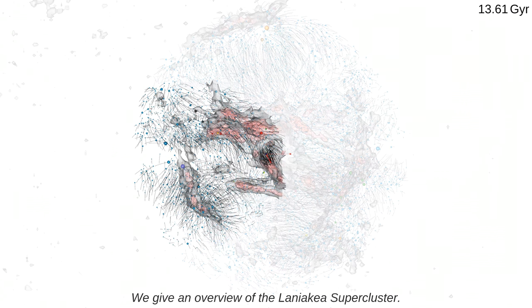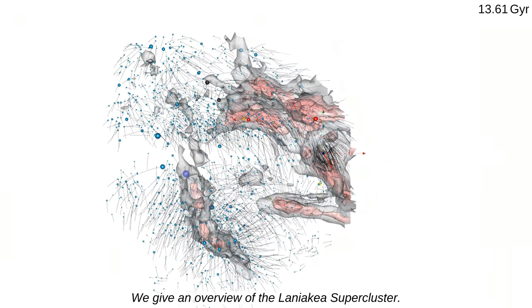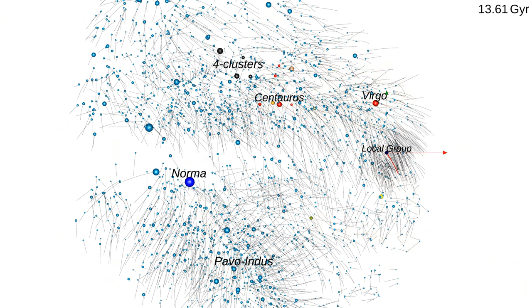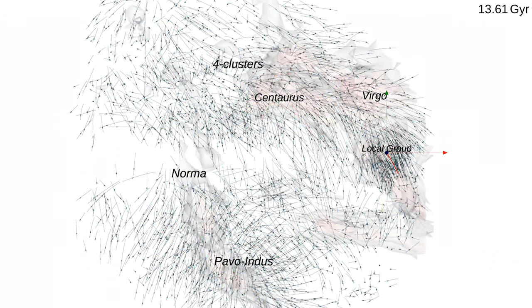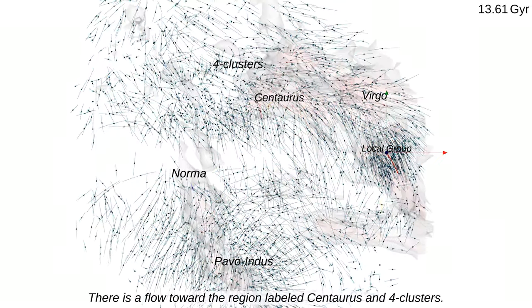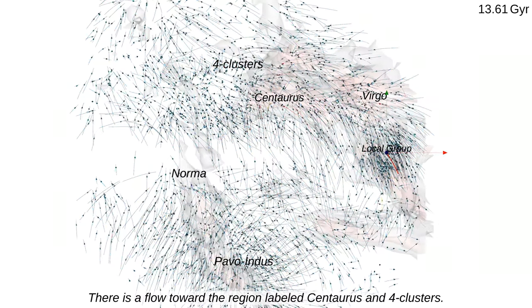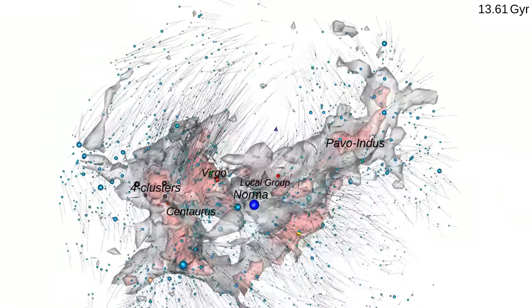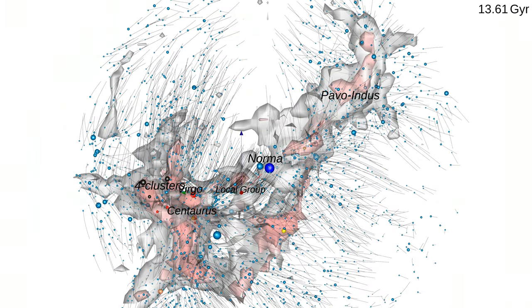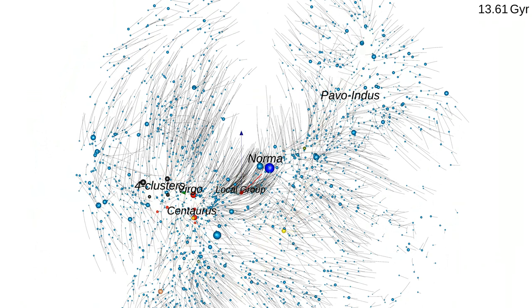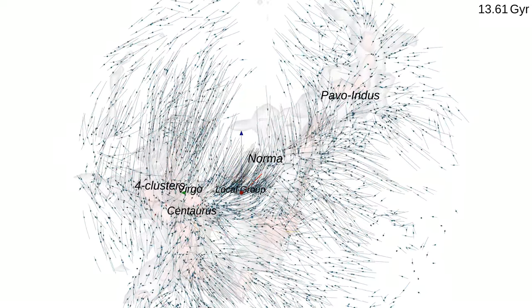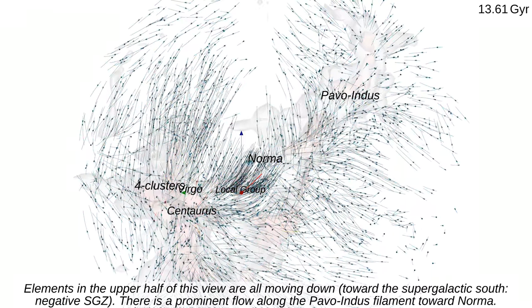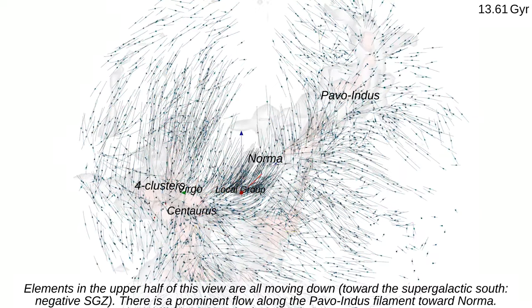We give an overview of the Laniakea supercluster. There is a flow toward the region labeled Centaurus and four clusters. Elements in the upper half of this view are all moving down toward the supergalactic south negative SGZ. There is a prominent flow along the Pavo-Indus filament toward Norma.